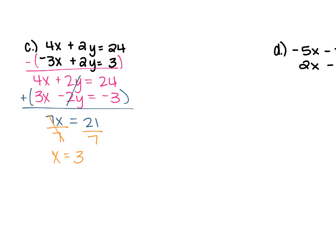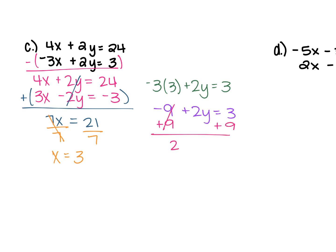Pick one of the two original equations. Using the bottom equation because of smaller numbers: negative 3 times x, which is positive 3, plus 2y equals 3. Negative 3 times positive 3 is negative 9, so negative 9 plus 2y equals 3. Add 9 to both sides to get 2y equals 12. Divide each side by 2 and y equals 6. So x is 3 and y is 6 — the ordered pair is (3, 6).